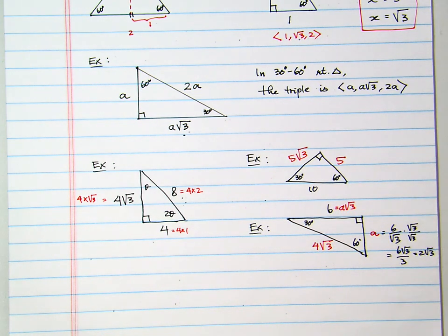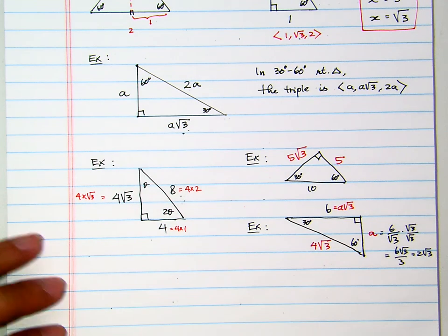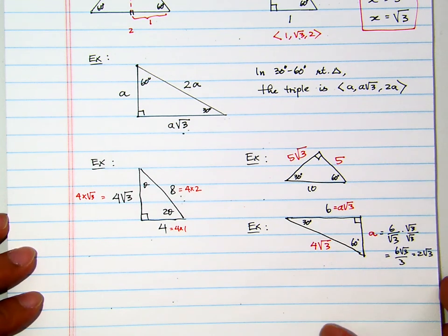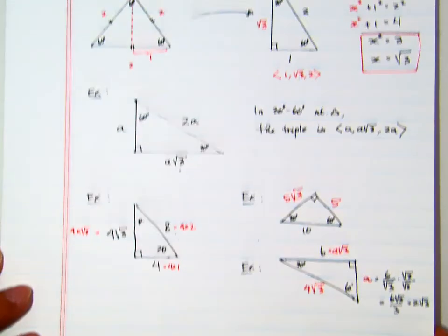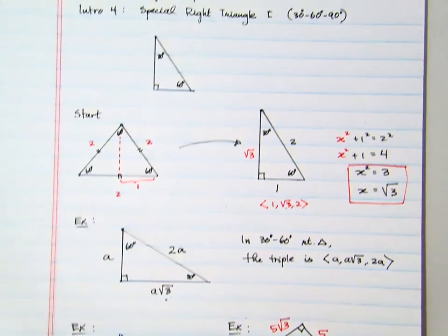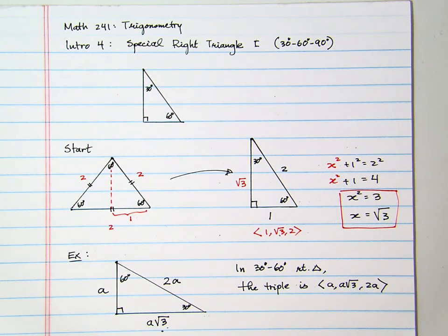This is the fourth introduction to Math 241 Trigonometry, in which we discussed the first special right triangle — the 30-60-90 degree right triangle.